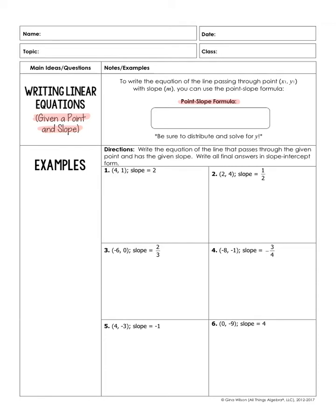So it says to write the equation of the line passing through the point xy with the slope one, you can use the point-slope formula. So here's what it looks like: y minus y1 equals m times x minus x1. And this x1 and y1 will be given to you. They'll give you some point and you'll plug it in for x1 and y1. They'll also give you the slope, that m, so you can just plug that in there.